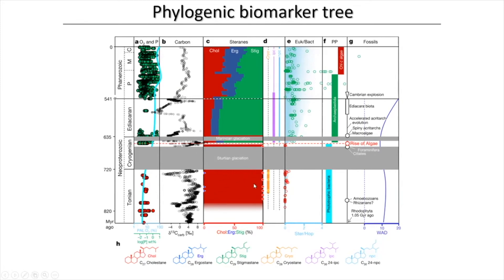Before the gray layer, we cannot find any C28 or C29 sterols in sedimentary records. That means animals did not have the ability to produce C28 and C29 molecules before this event — animals could only produce C27. But after the gray layer, we see the appearance of C28 ergostane and C29 stigmastane molecules. Obviously there was biological evolution between these gray layers — before and after.